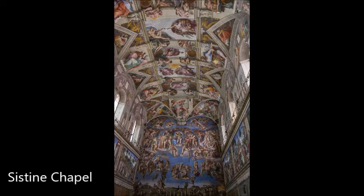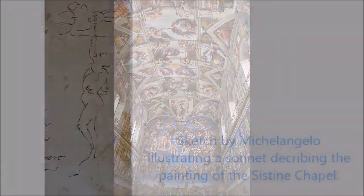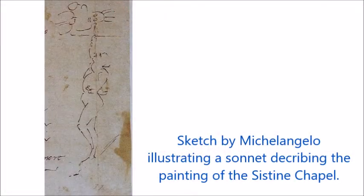Michelangelo ultimately proved them wrong, but that's not to say he didn't face challenges creating this gigantic piece of work. A letter survives from 1509, a year into the commission, from Michelangelo to his friend Giovanni da Pistoia, detailing how much he hated the process. It is written in the form of poetry and it goes something like this.